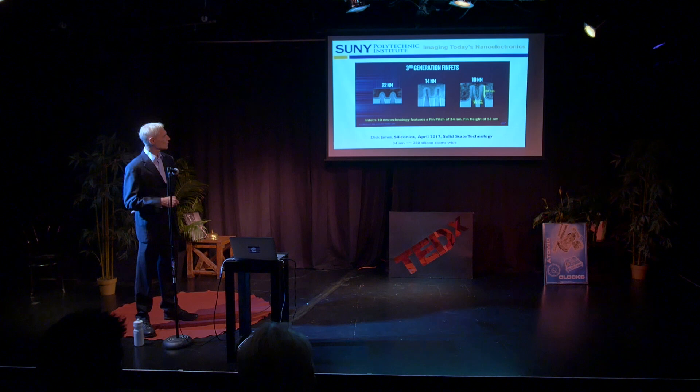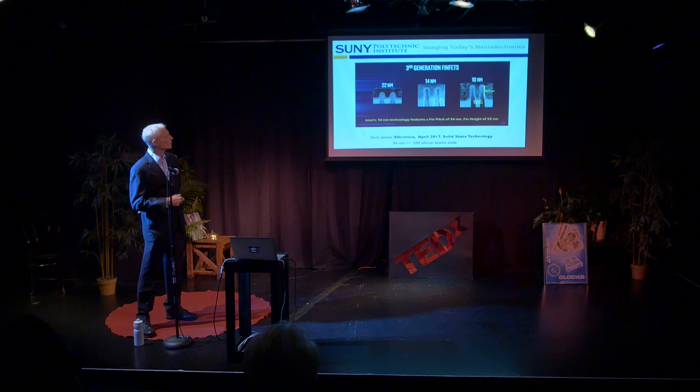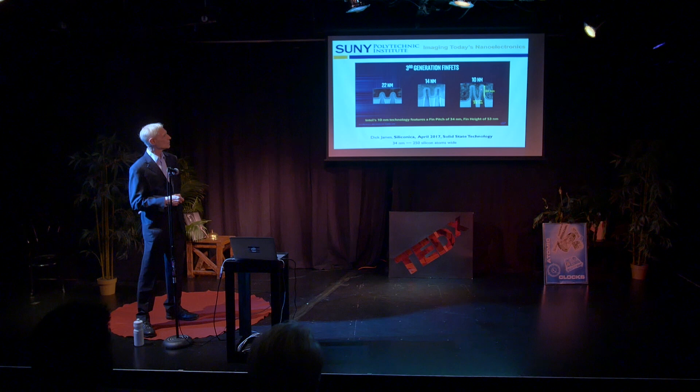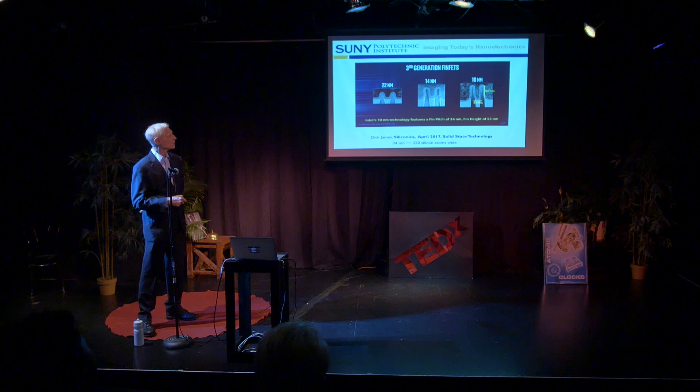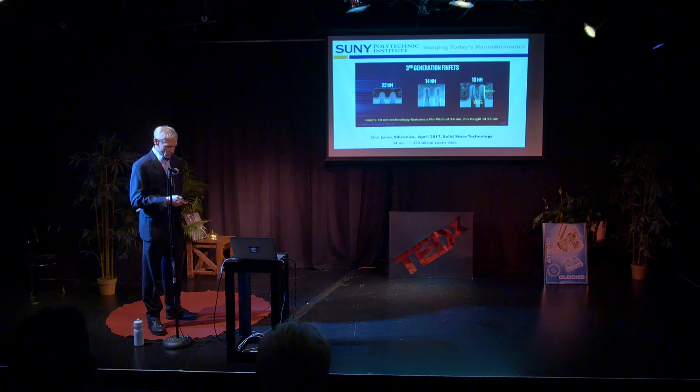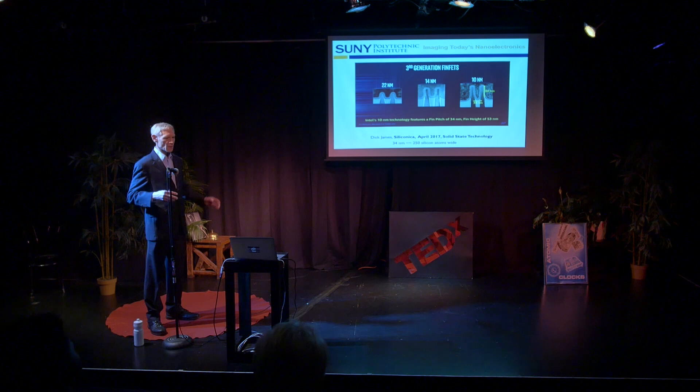How does this impact what we're doing in electronics? The transistors in your cell phone or your computer — the heart of those electronic chips — are getting smaller and smaller. This is taken from Dick James' Siliconica column in solid-state technology. You can see constant shrinking from 22 nanometers, 14, and 10 nanometers. Ten nanometers is 100 angstroms, and the distance between those two fins is 340 angstroms. It's incredibly small, and one of the things you gain from making these transistors smaller is you can pack more transistors into a smaller area so that microprocessor can do more computing — and most of the time they can get faster.